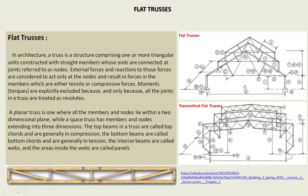For flat trusses: what is a flat truss? In architecture, a truss is a structure comprising one or more triangular units constructed with straight members whose ends are connected at joints referred to as nodes.